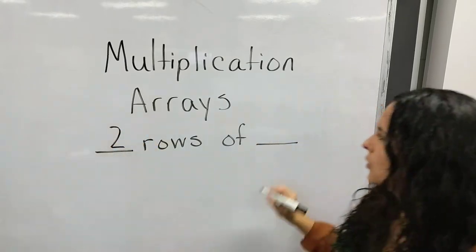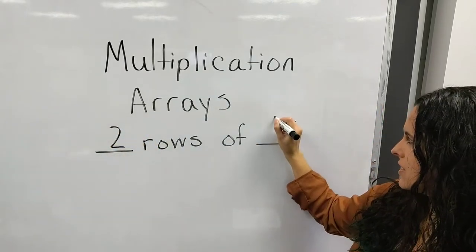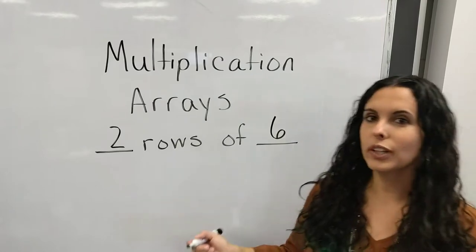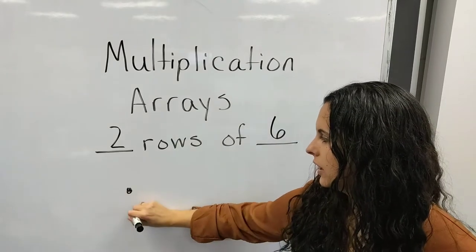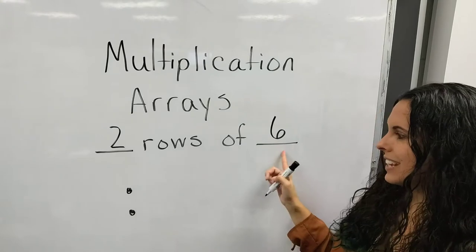Let's do two rows of six. So to build our array we need two rows. One, two, and we need six in each row.